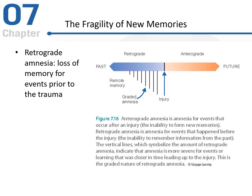Now we'll take a look at how fragile new memories can be, specifically for amnesia. Most people know it's a loss of memory, but there are two different types. The first is anterograde amnesia — this is loss of memory or inability to form new memories past a certain point of injury or trauma. Basically, they incur some sort of trauma and they're not able to form any new long-term memories after that. Conversely, retrograde amnesia is the loss of memory for events prior to the trauma, where the person is having issues recalling information that occurred before the injury.